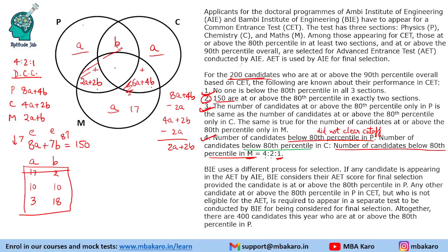In Case 1 with A=10: all three single-section values are 10, making 30. The total so far is 180 and the remaining central value is 20. With B=10, the region values come out as 10, 40, and 100.